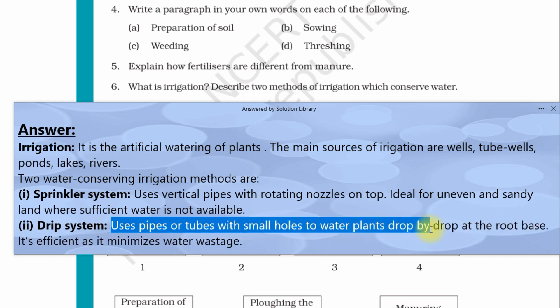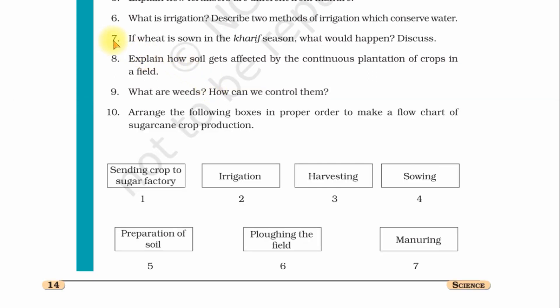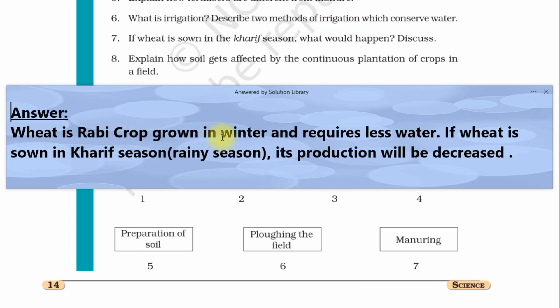Question number seven: If wheat is sown in Kharif season, what would happen? Discuss. Answer: Wheat is a Rabi crop grown in winter and requires less water. If wheat is sown in Kharif season, rainy season, its production will be decreased.